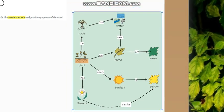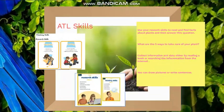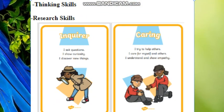We are going to draw this map in class and add a lot of information about plants that we already know or have learned from our teachers. Now, let's move to the ATL skills, which are related to this theme. We are going to be inquirers because this is a science field, and we always look for information, ask questions, show curiosity, and discover new things. We are also caring because we said that we are responsible towards our planet and towards plants living on it. We try to help others and even other living things, we care for ourselves and others, we care for the environment and the planet around us, and we show empathy for all organisms around us, not only humans.